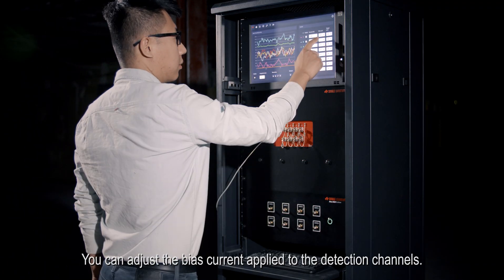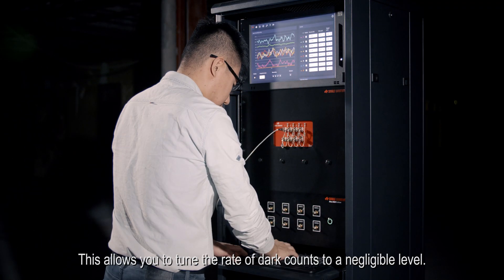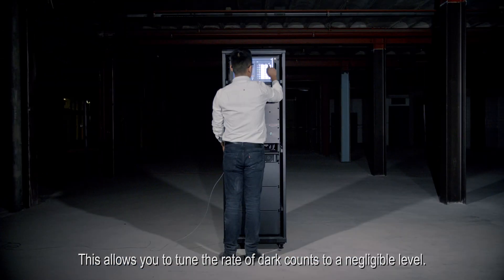You can adjust the bias current applied to the detection channels. This allows you to tune the rate of dark counts to a negligible level.